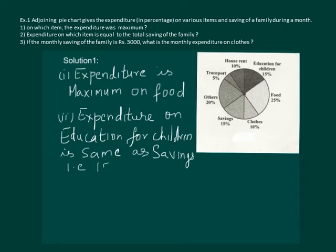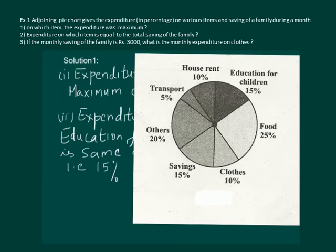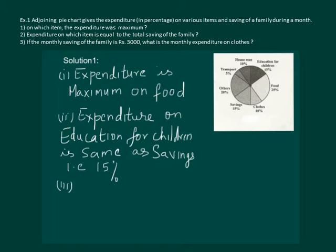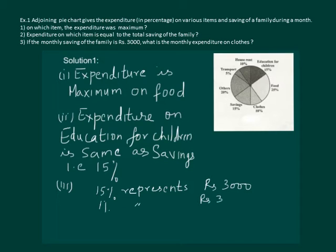That is 15%. The third part of our question is: if the monthly savings of the family is Rs. 3000, what is the monthly expenditure on clothes? From the graph we note that 10% is spent on clothes and 15% is savings, which is equal to Rs. 3000. Let us use the unitary method to calculate. It is given that 15% represents Rs. 3000, then 1% will represent Rs. 3000 divided by 15.